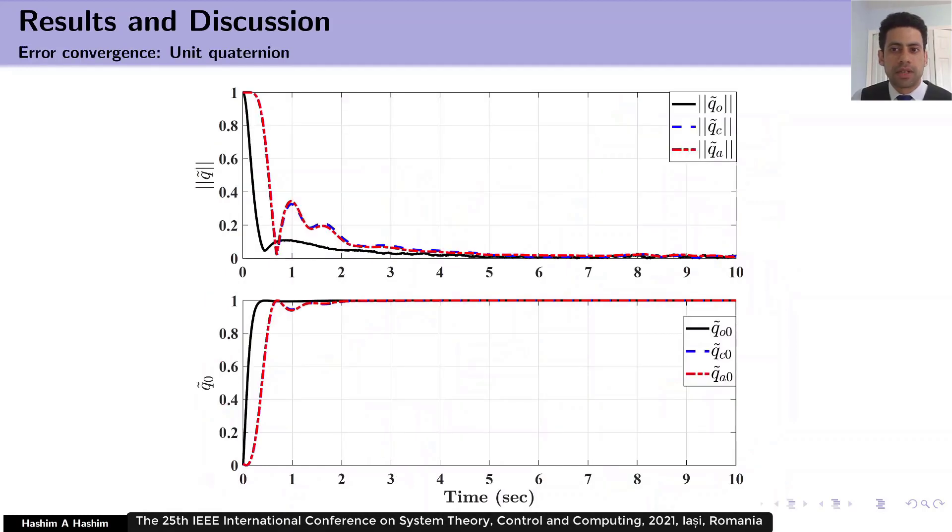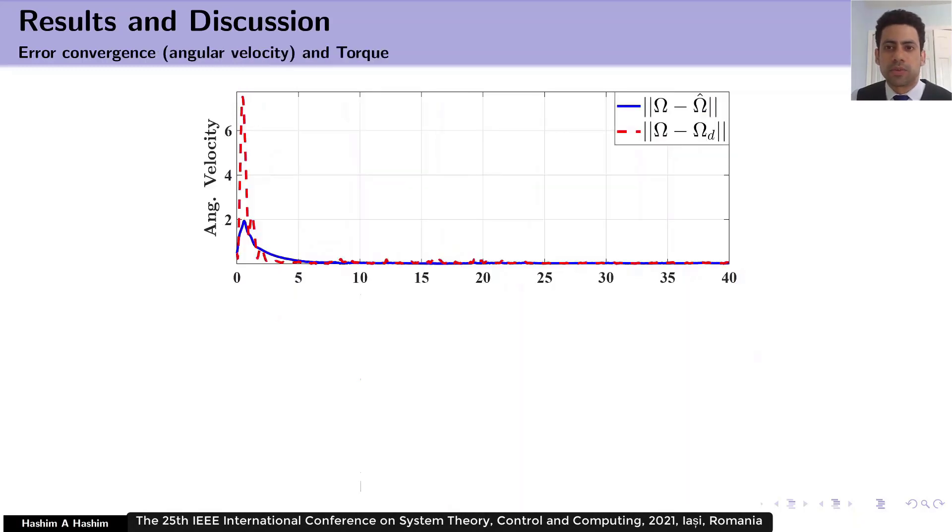This figure demonstrates fast convergence of the error components, starting from large values to the origin. And the lower portion of this figure shows the boundedness of the control input, or rotational torque. So here q tilde 0 converges successfully to 1. Once again, this figure demonstrates fast convergence of the error in angular velocity, starting from large values to the origin.